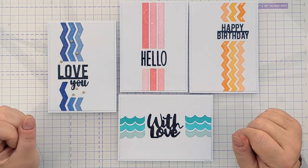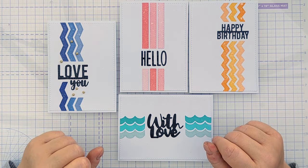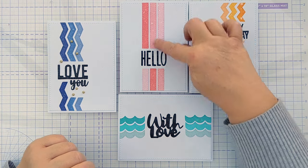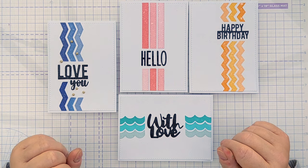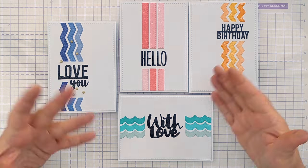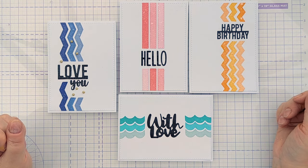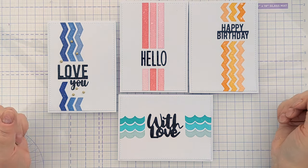If you wanted to recreate these cards you don't necessarily need the same dies that I've got. You could just stick with strips and cut them with your trimmer, or you might have other dies that you can adapt. And of course you can use any sentiment dies you've got or even stamp the sentiment. You don't have to color the strips that you cut.